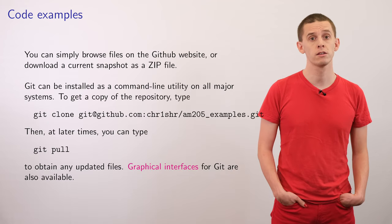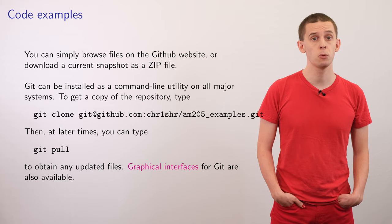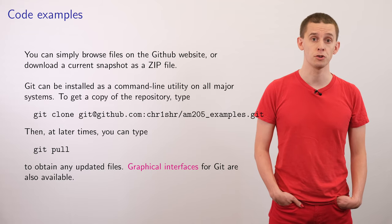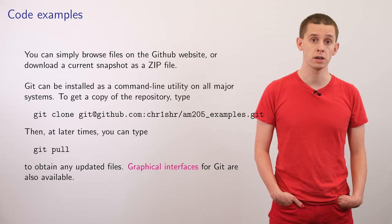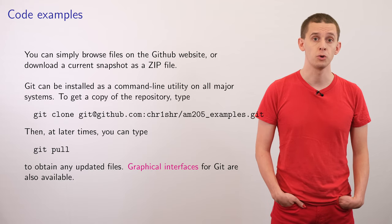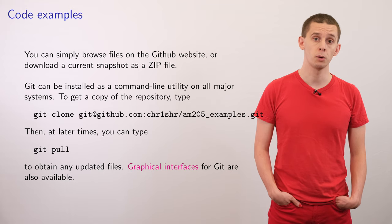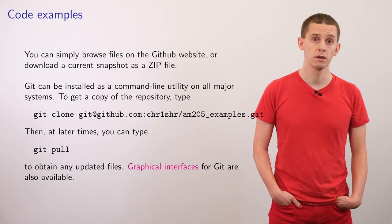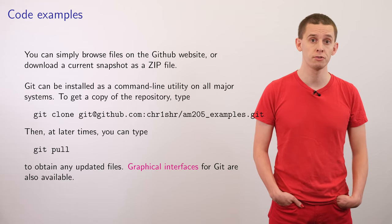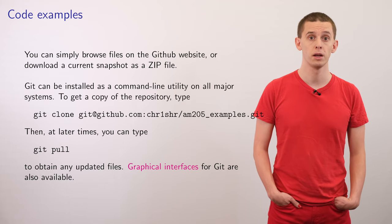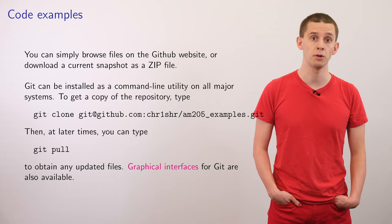Git is the software itself, but there are many websites available that host Git repositories online. One of the most popular of these is GitHub, which is where the AM205 examples repository is stored. And if you go to the GitHub website, then you can actually browse individual files in the AM205 examples repository without even downloading them.